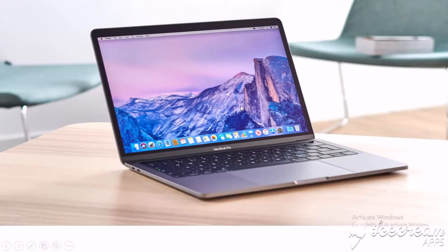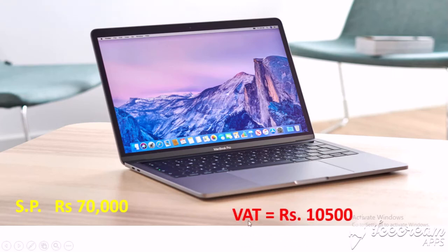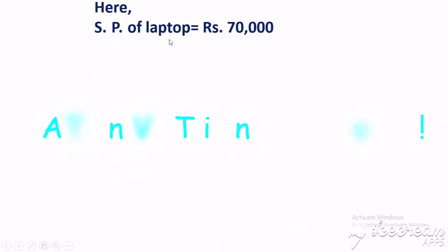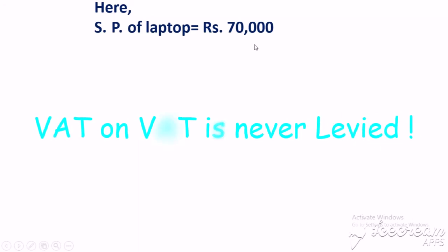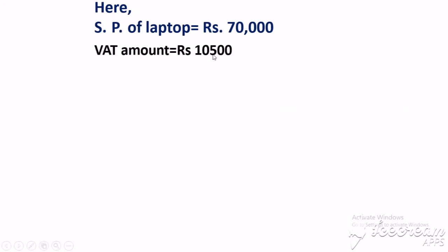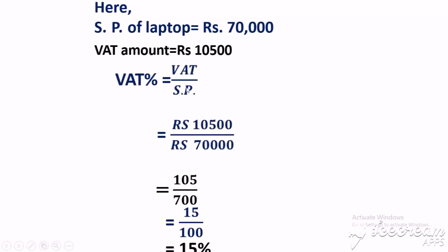Now look at another example. Here is one laptop. The selling price of this laptop is Rs. 70,000 and the VAT amount is Rs. 10,500. Here VAT amount is given, so we are going to find the VAT percent. VAT percent equals VAT amount upon SP. Because VAT is applied on SP, it is compared with SP, so SP is written in the denominator and VAT in the numerator.